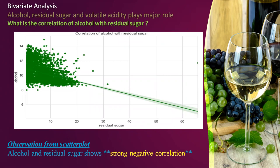Bivariate analysis gives the correlation between any two variables or ingredients given in the dataset. From univariate analysis, we find that alcohol, residual sugar, volatile acidity, and sulfates play a major role. Here we'll see the correlation between alcohol and residual sugar. From the scatter plot, we observe that alcohol and residual sugar show a strong negative correlation, as the fitting line goes from the topmost left to the rightmost bottom — so alcohol and residual sugar are very strongly negatively correlated.